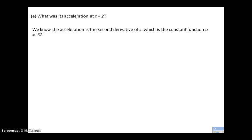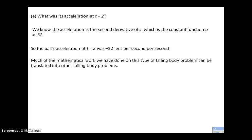What was its acceleration at t equals 2? That's the second derivative of position or the first derivative of velocity and that was negative 32 feet per second per second or negative 32 feet per second squared. Much of the mathematical work we've done on this type of falling body problem can be translated into other falling body problems. All we need is our initial height and our initial velocity and we can work with any falling body problem.